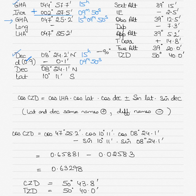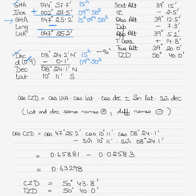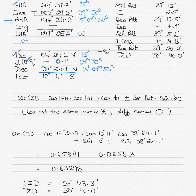Adding the increment to the GHA, I get the corrected GHA. I then apply the longitude — since longitude is 0 it makes no difference, but normally East longitude is added and West longitude is subtracted — giving me the LHA. I subtract the D correction since declination was decreasing, obtaining the declination for 15 hours 09 minutes 50 seconds. My LHA is named West because LHA between 0 and 180 is named West; above 180 to 360 is named East.